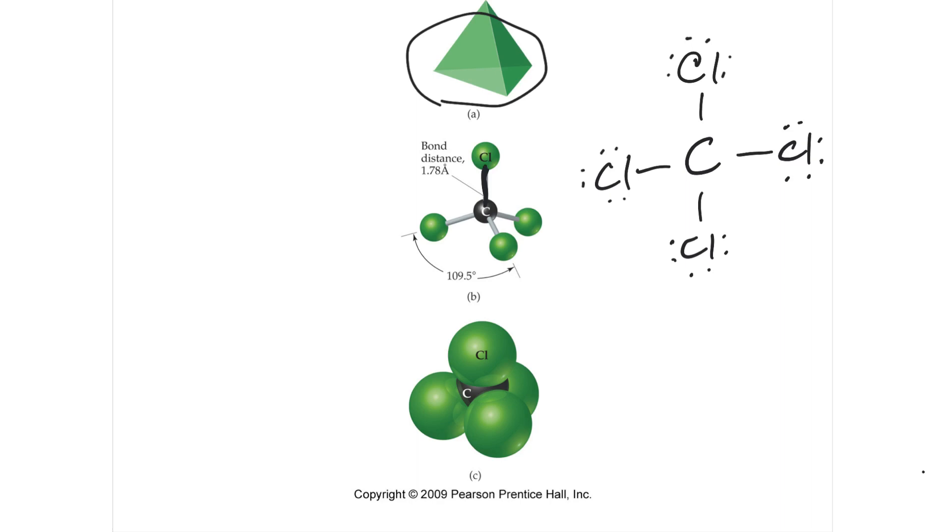Angstrom is 10 to the negative 10th, so like one 10 billionth, or a tenth of a billionth of a meter, ridiculously small. That's how small the bond length is.